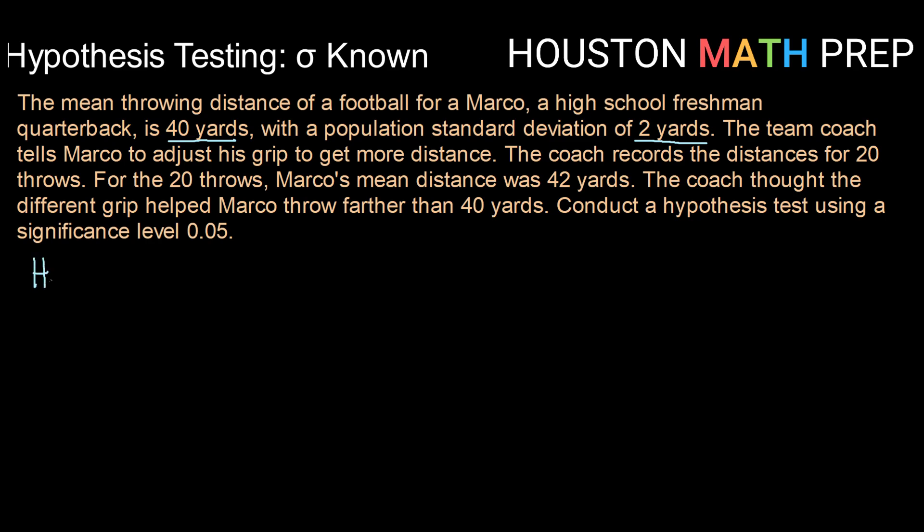First thing we want to do is write a set of hypothesis statements. We are talking here about a mean throwing distance, so both of our hypothesis statements are going to be about μ. We are comparing our μ to the status quo of 40 yards. The coach thinks that the different grip helped Marco throw farther. So farther would mean we are testing the claim that μ is greater than 40.